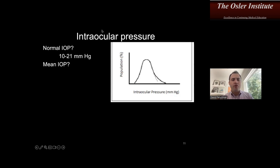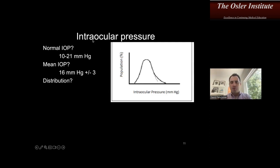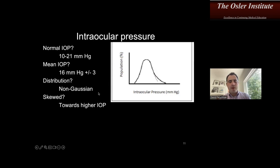The mean pressure is about 16, give or take — 16 to 17, plus or minus 3. There's a reason I'm asking all of this. How do we normally describe the distribution of eye pressure among a population? It is non-Gaussian and skewed toward higher pressures. Why is the distribution of IOP skewed toward higher pressures?